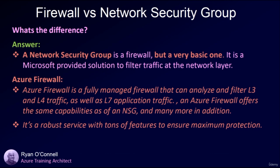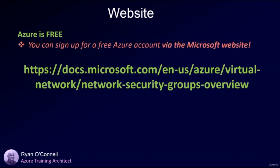An NSG is essentially a firewall, but a very basic one — it's Microsoft's solution to filter traffic at the network layer. An Azure Firewall, by contrast, is a fully managed firewall that can analyze and filter layer 3, layer 4, and layer 7 traffic. The Azure Firewall has many more features to ensure maximum protection. By default, when you build a virtual machine in Azure, it will create a network security group to keep your resources secure.